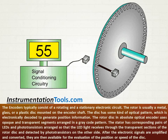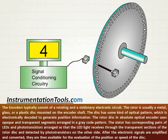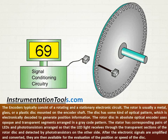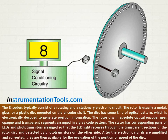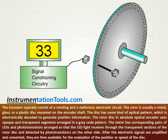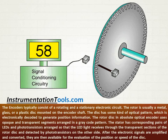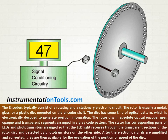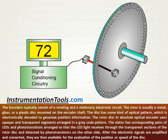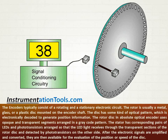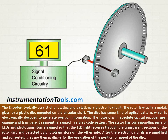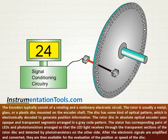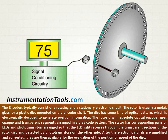The rotor disc in an absolute optical encoder uses opaque and transparent segments arranged in a grey code pattern. The stator has corresponding pairs of LEDs and phototransistors arranged so that the LED light passes through the transparent sections of the rotor disc and is detected by phototransistors on the other side.